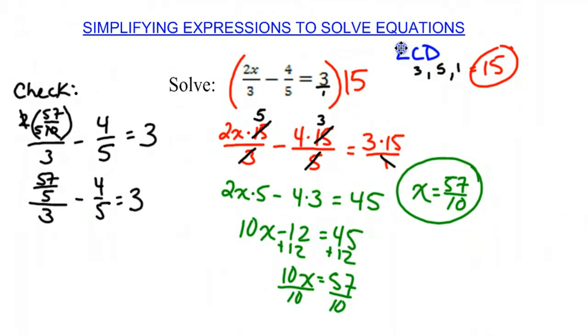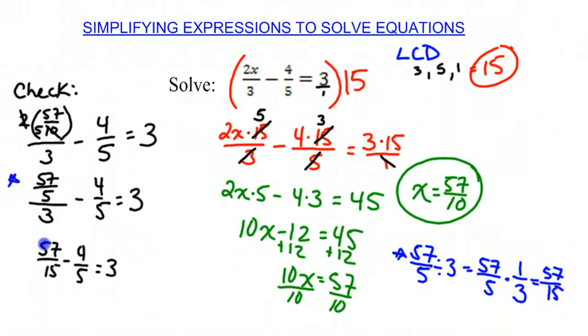Now, you should remember from your fractions that when we do 57 over 5 divided by 3, that is actually going to be 57 over 5 times the reciprocal, which is 1 third. So that gives us 57 over 15. So I'm going to replace that in the next line. And I'm going to put 57 over 15 minus 4 over 5 equals 3.